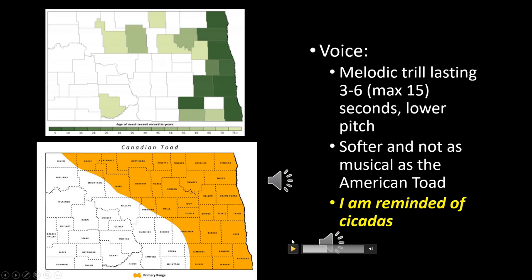When it's only a handful of toads there tends to be a lot of dead air between calls. As the breeding season ramps up and more males call, they overlap and it becomes harder to parse, but it's that low-pitch trill lasting about five seconds — up to fifteen, but typically three to five seconds.